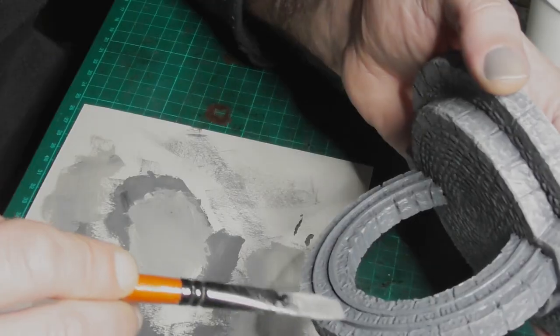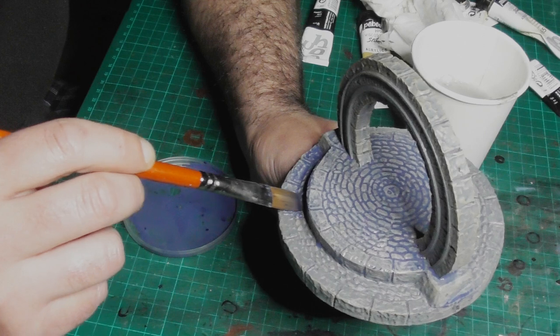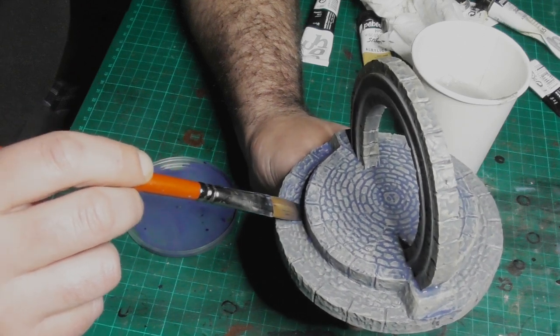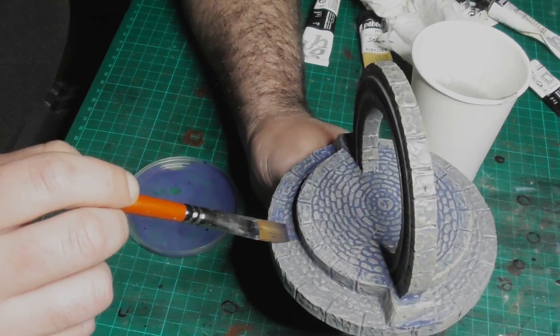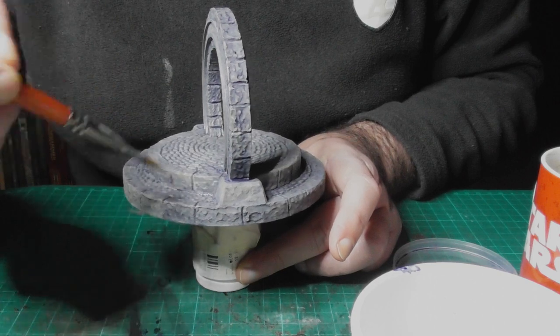The stone got a whole lot of dry brushing with grey, ochre and ivory, followed by a wash of Payne's grey. Once this dried more dry brushing with ivory and a tiny amount of white.